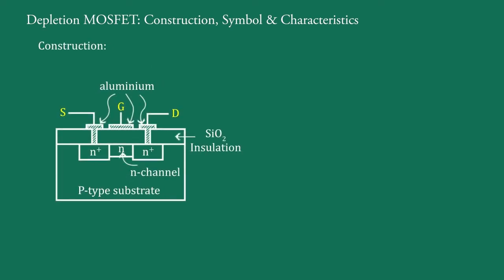This figure shows the construction of an N-channel depletion MOSFET. It consists of a lightly doped P-type substrate.